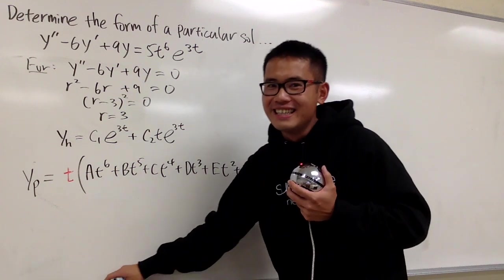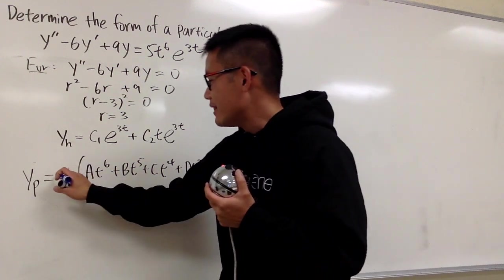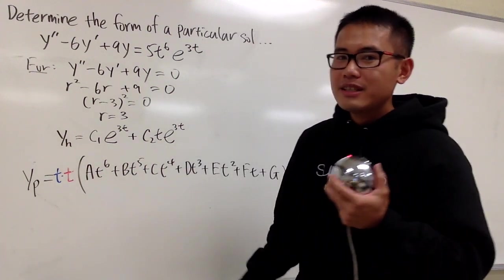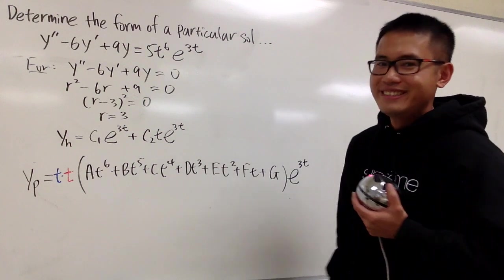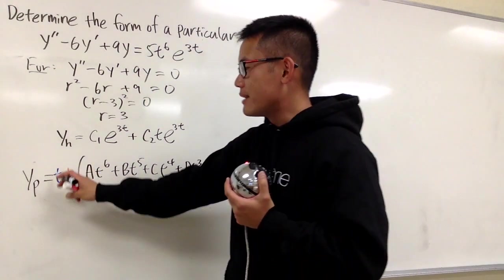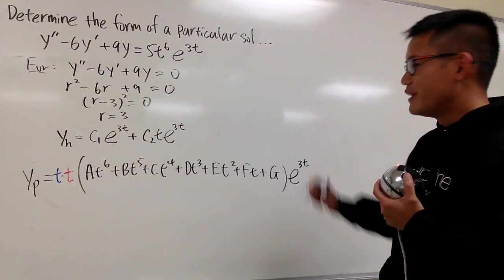Well, to fix that, I just have to multiply by another t. So you have to be sure you multiply t as many times as you need to. In this case, we are multiplying by t squared throughout this right here.